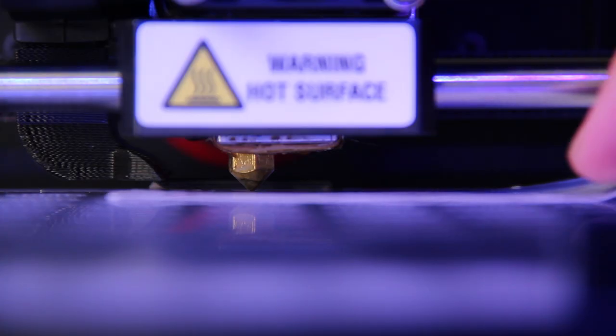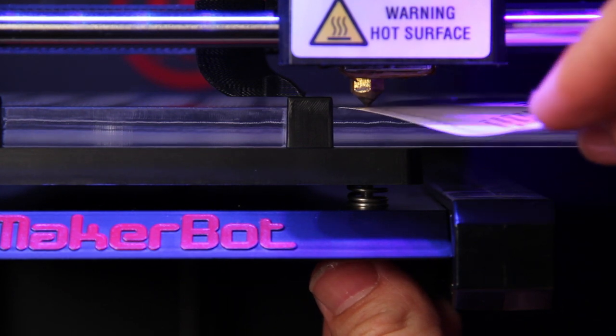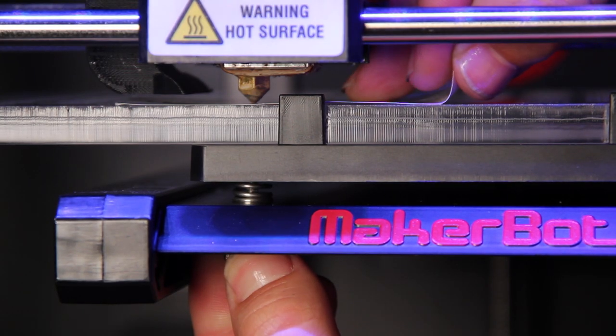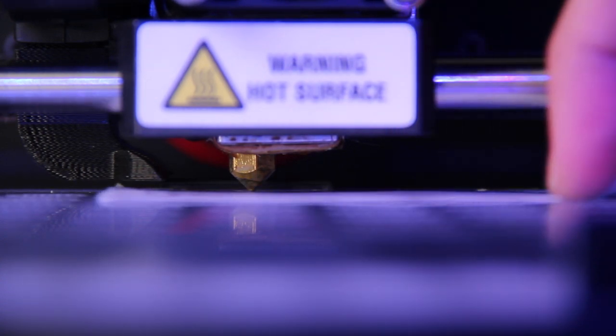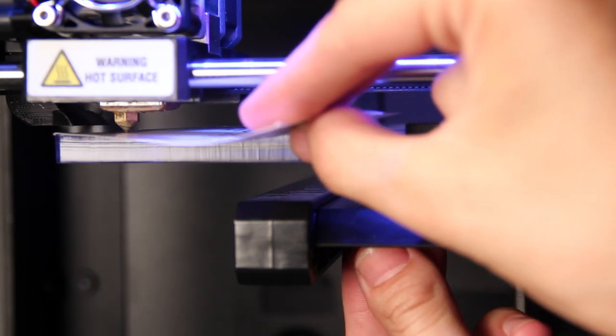You will be asked to do this at the back of your build plate, then on the right side, then on the left, and then one more time to refine it a little more at the back, over the right corner, and over the left corner.